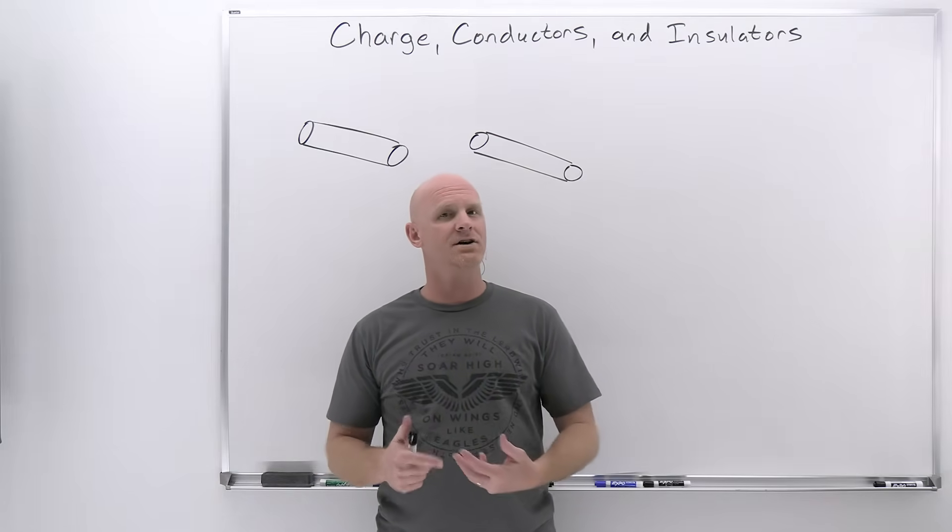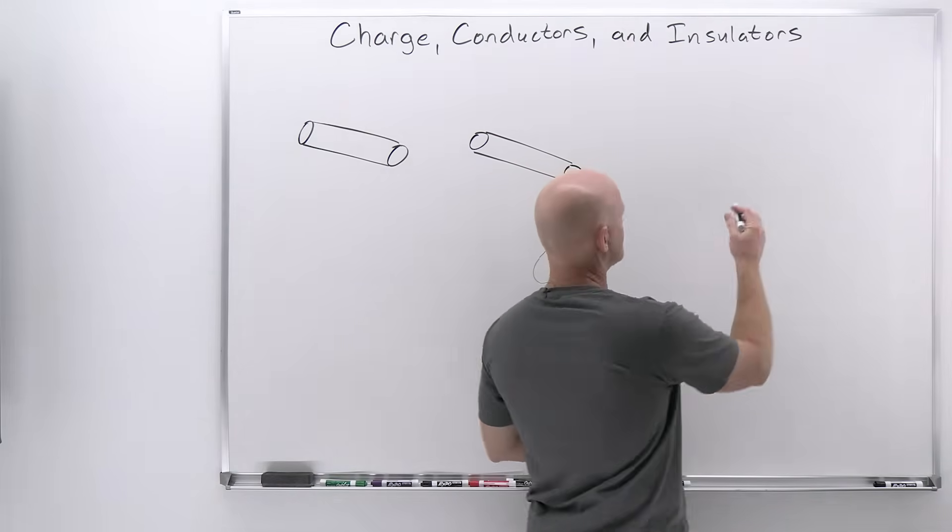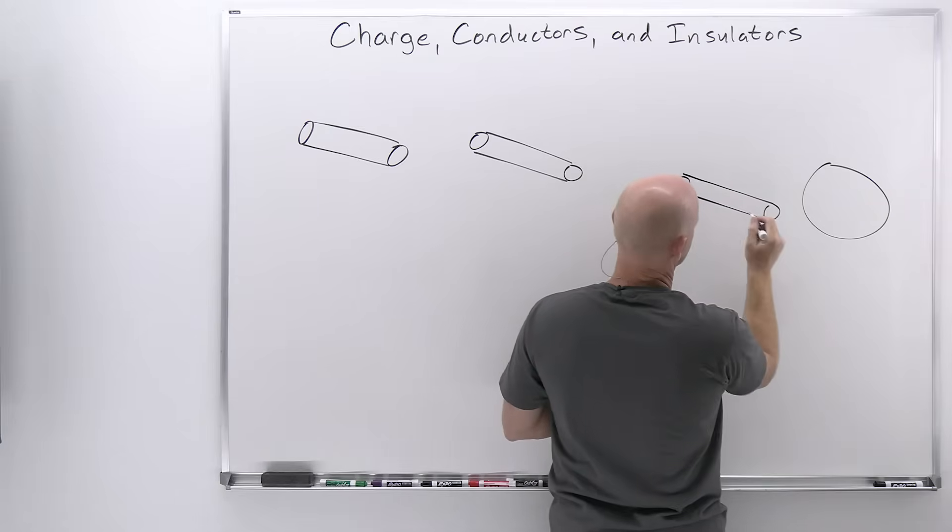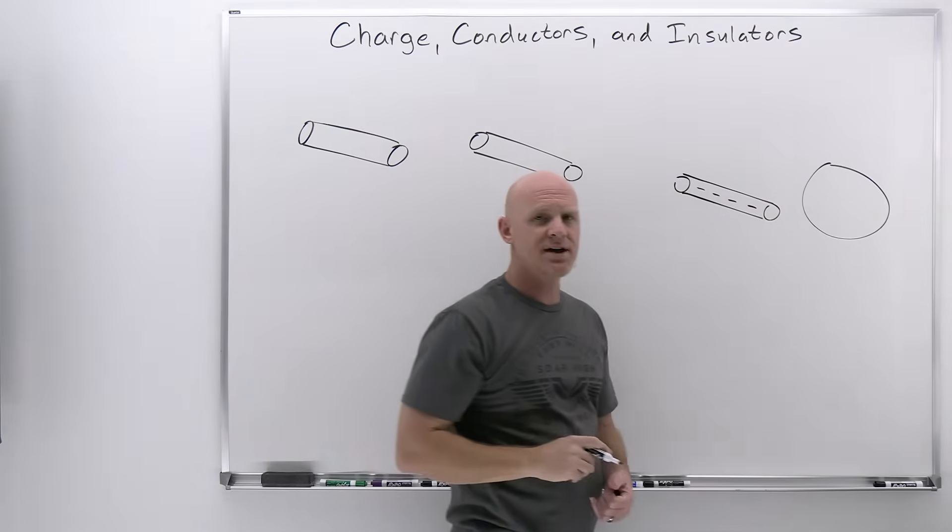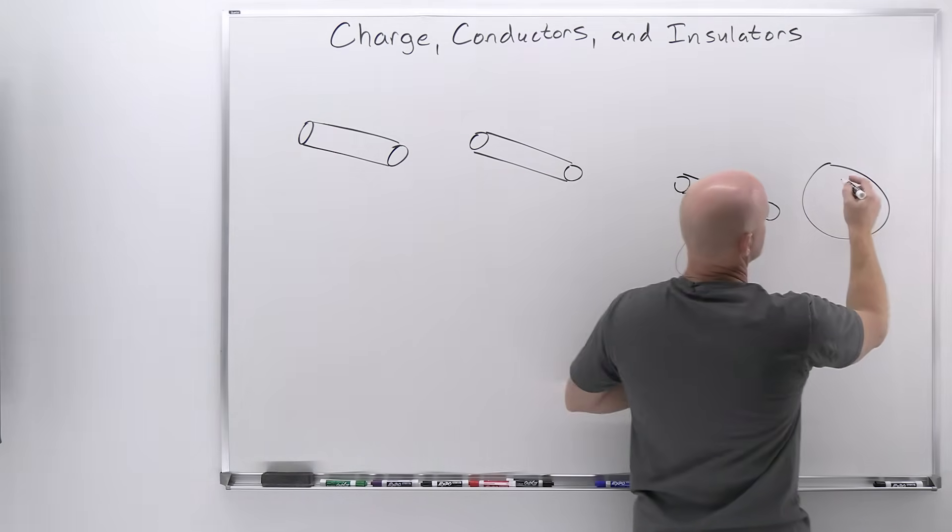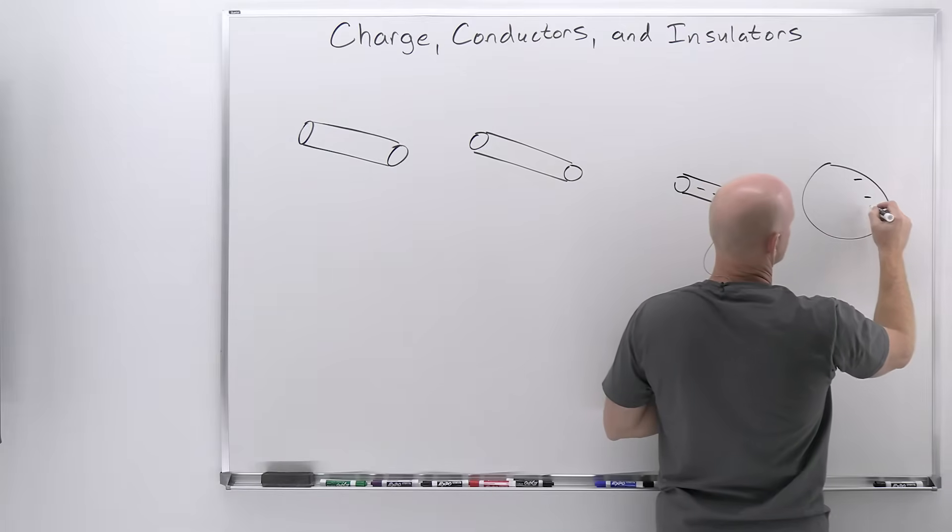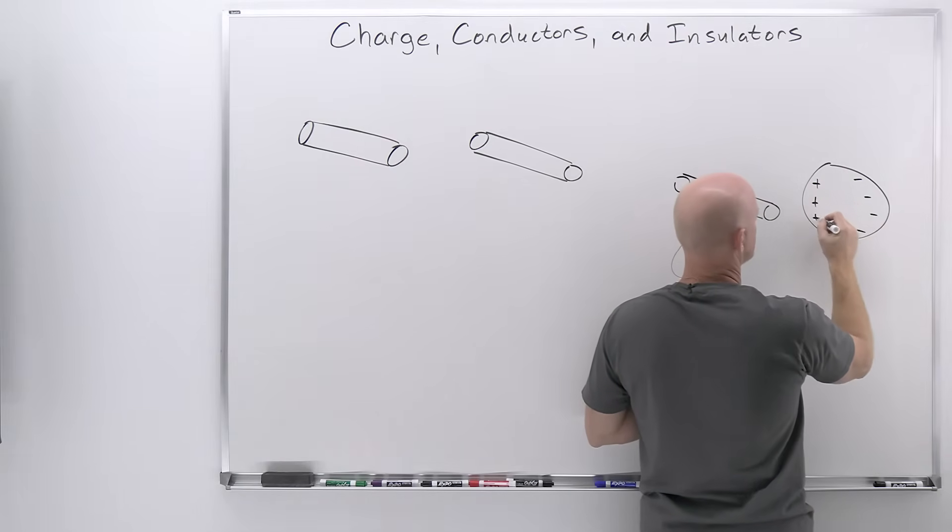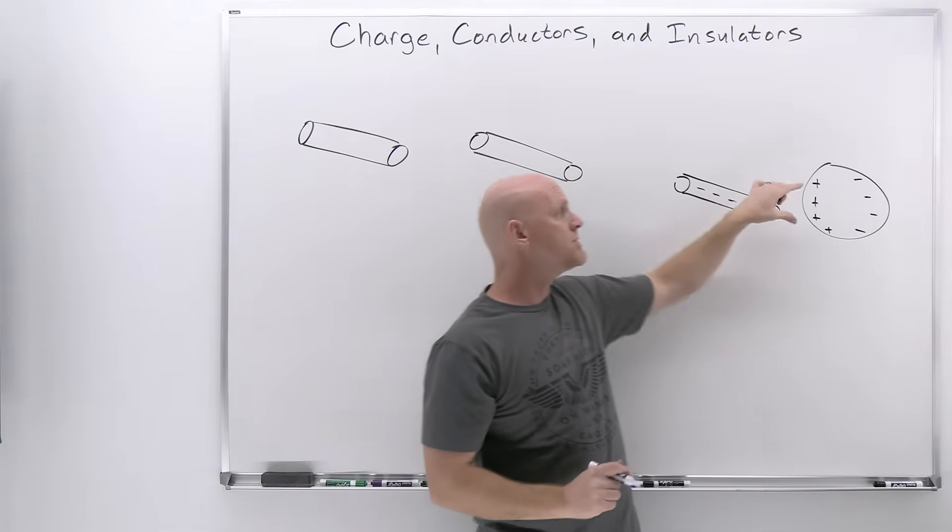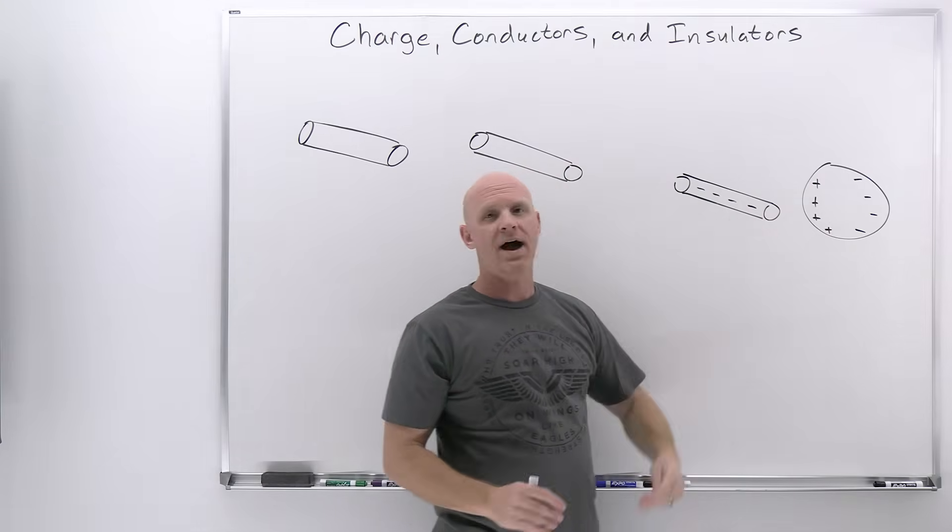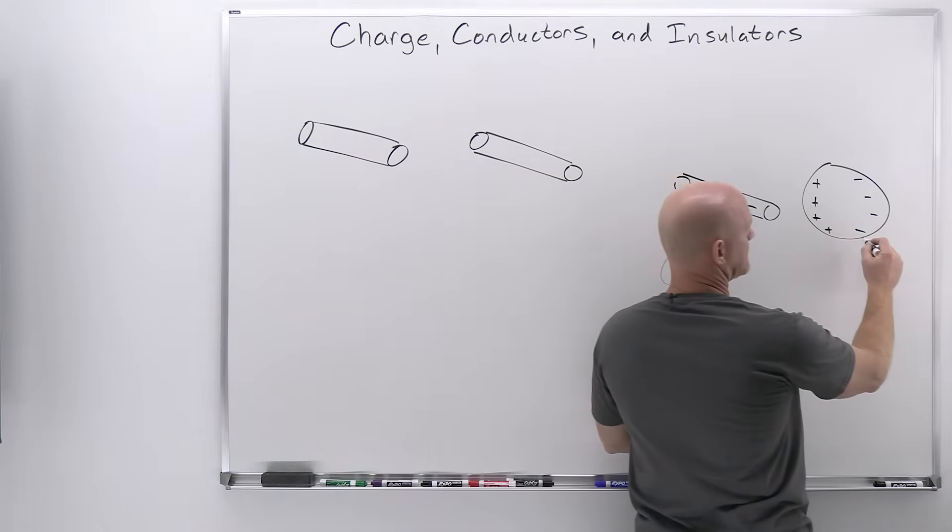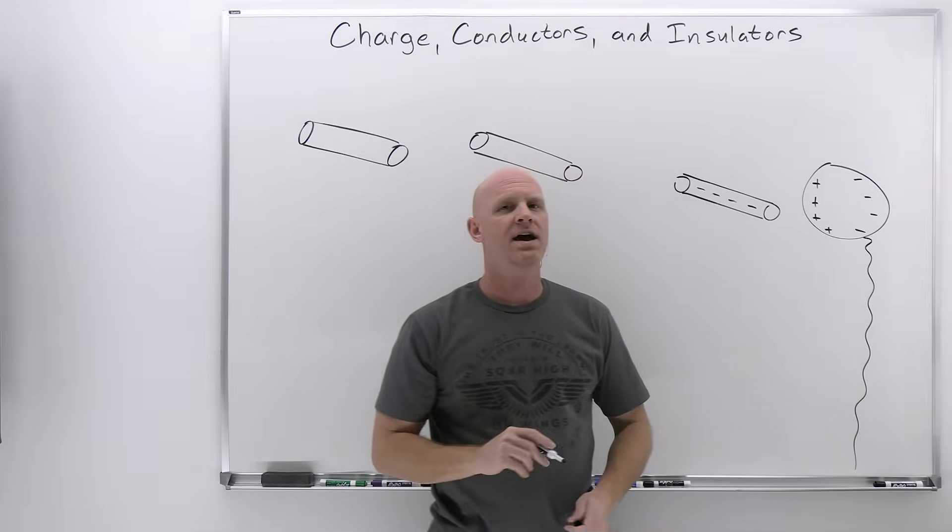There's also charging by induction, which is more complicated. If we take a sphere and a charged rod, in this case the rod has an overall negative charge with excess negative charges, and I bring it close to this sphere which is neutral, it's going to cause the negative charges in this sphere to move to one side, leaving a positive charge behind on the other side, due to repulsion from the negatively charged rod. But if I move this rod away, the distribution will move back as long as this is a conducting sphere.